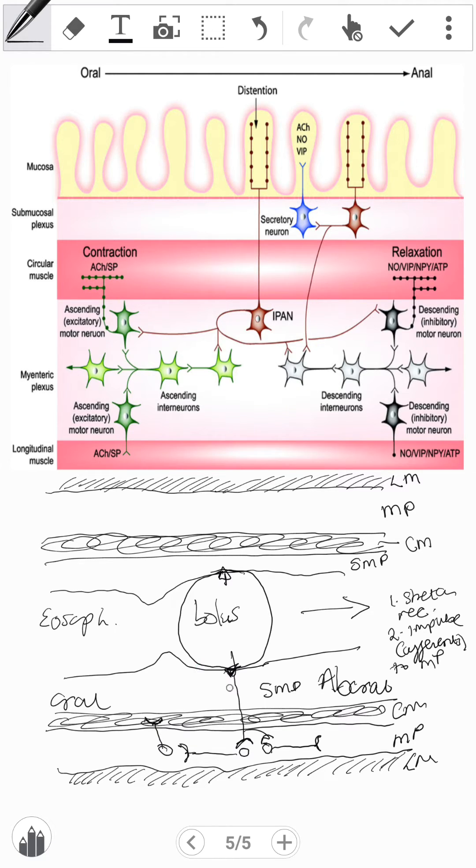These neurotransmitters are excitatory on the circular muscle and also on the longitudinal muscle. So these include acetylcholine.